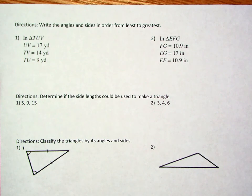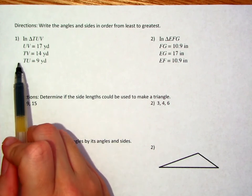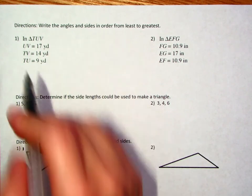So this lesson is an introduction to triangles to kind of bring together what you guys did in your stations. In number one, it says that we're supposed to write the angles and sides in order from least to greatest.